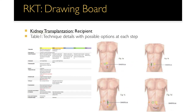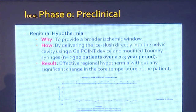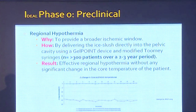This is from the archives — in 2012 we were thinking about where we would incise, where we would put the ports. We were making these diagrams of anatomy and thinking through how we would do this procedure. Regional hypothermia was important because it would provide a broader ischemic window — even if you take a long time or need to redo the anastomosis, the graft would not get harmed.